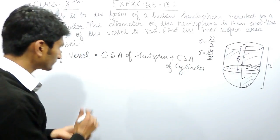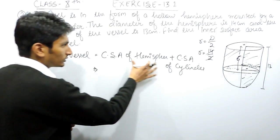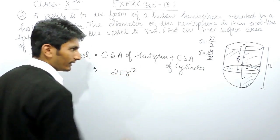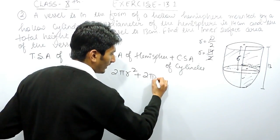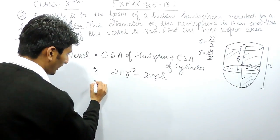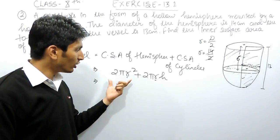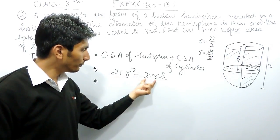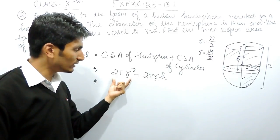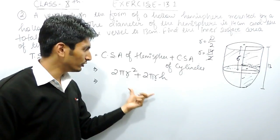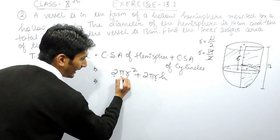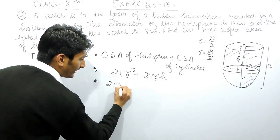The curved surface area of the hemisphere is 2πr² and the curved surface area of the cylinder is 2πrh. Since the radius is the same for both figures, we can take 2πr as a common factor. This makes the calculation shorter — instead of computing 2πr twice, we only compute it once.